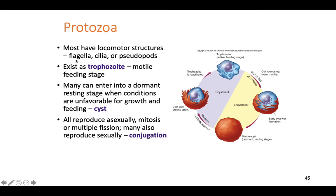Protists move around using a flagella, cilia, or something called a pseudopod — pseudo meaning false, pod meaning foot, so 'false feet.' Pseudopods work like an amoeba: it sends out a little structure first, called pseudopodia, and then the amoeba follows behind the structure it sends out. You'll either have a trophozoite — a fully functional adult protist swimming around, eating, moving, capable of causing disease — or a cyst form.